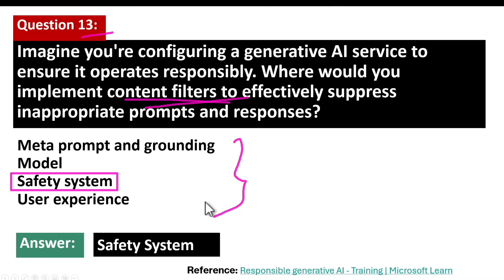Let's learn more about content filters in generative AI. Content filters are mechanisms designed to detect and suppress inappropriate or harmful content generated by AI models. These filters work by evaluating content against predefined criteria and blocking or modifying responses that fall into categories deemed unsafe or unsuitable.